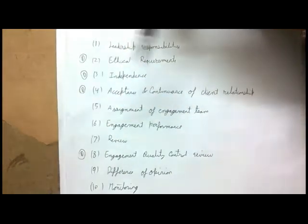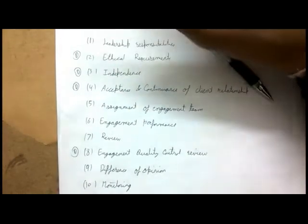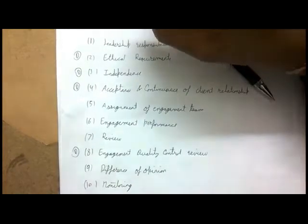The letter 'D' marks documentation points throughout this video. At the end of the standard, there is a subheading on documentation covering what the auditor must document — regarding ethical requirements, independence (including events causing threats to independence), acceptance and continuance of client relationships, and engagement quality control review. This is the only standard where not only the auditor but also the EQCR has documentation responsibilities.